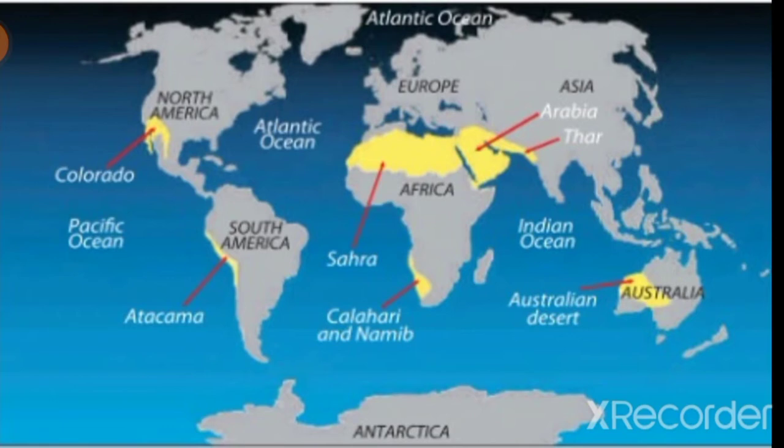Tropical Desert means a bare land — places which have less amount of vegetation and high temperature with low rainfall. Most of the area is covered by sand plains.